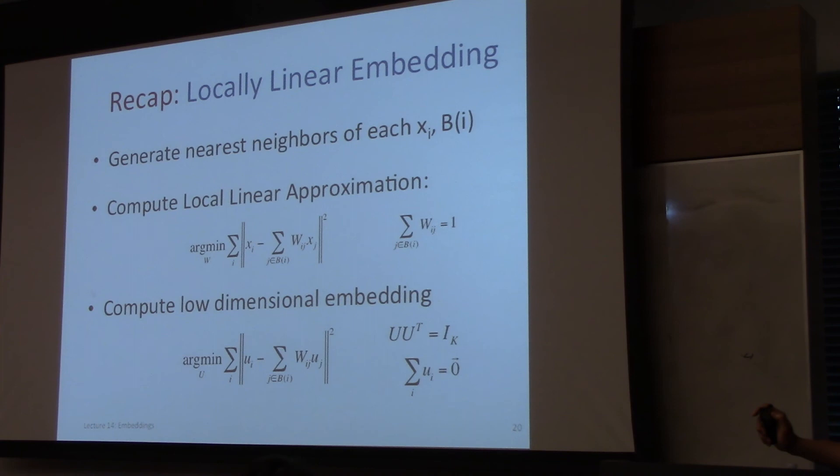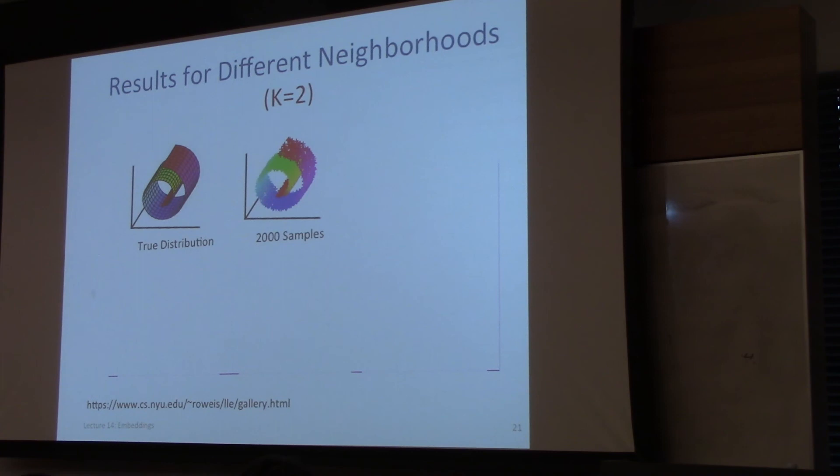Here are some results for k equals 2. The original dataset for visualization is three-dimensional — not particularly exotic, but one that can be visualized. You draw 2,000 samples from this distribution.